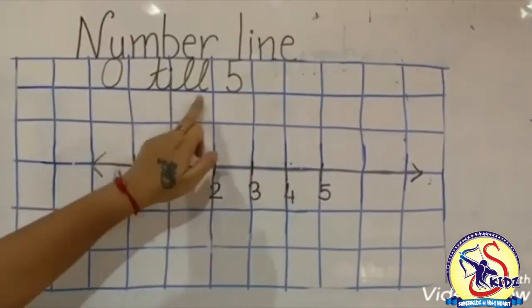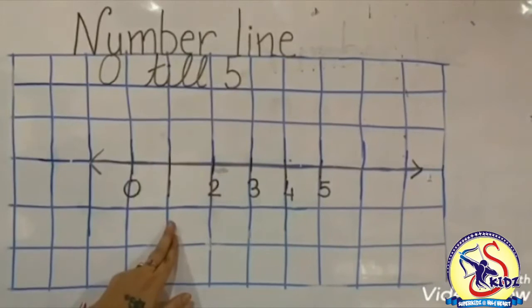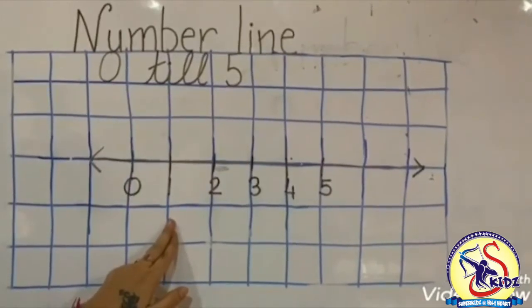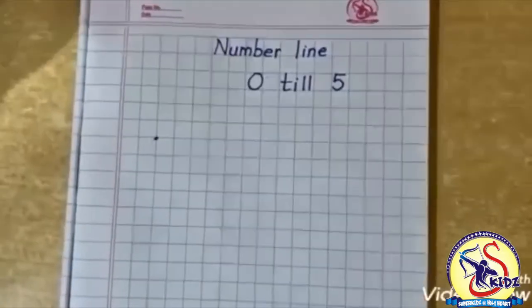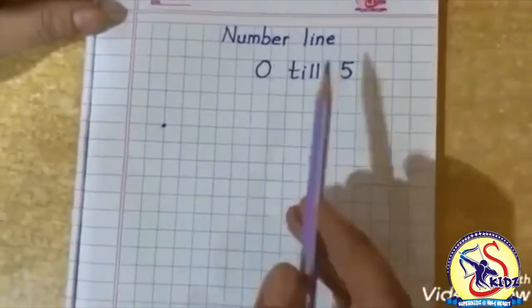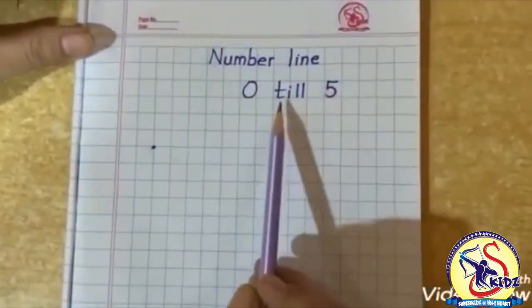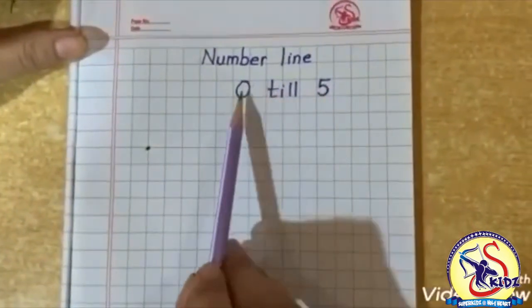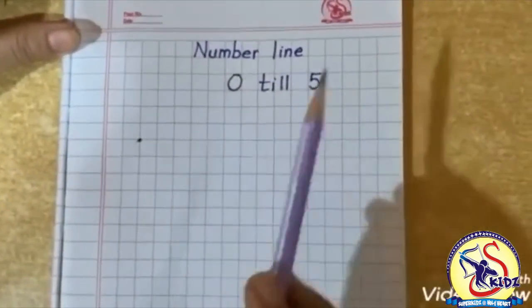0 till 5 — this is exercise number 9. Now kids, we will do exercise number line on the notebook — number line from 0 till 5.